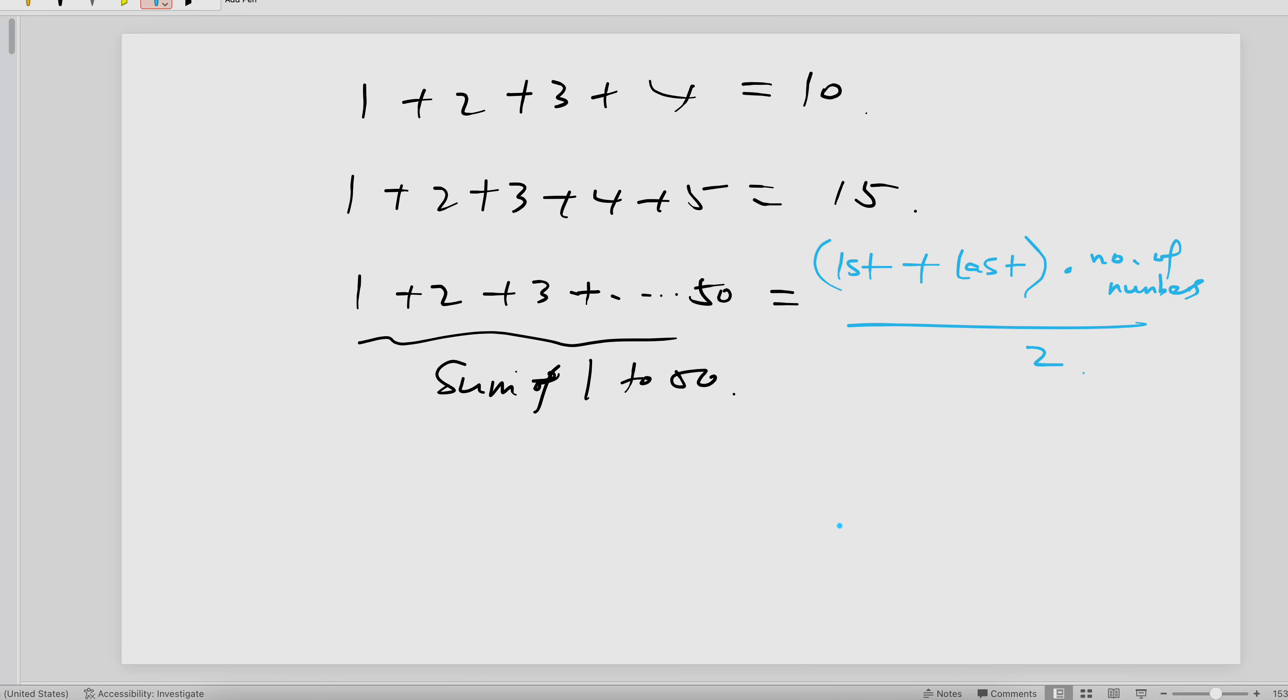So this is the formula. What is the first number in this case? One. What's the last number? Yes, good. So how many numbers are here from 1 to 50? One to four is four, one to five is five, so one to fifty is fifty. Correct. So you times fifty then divide it by two. Just use your calculator, it will be fifty one times twenty five.